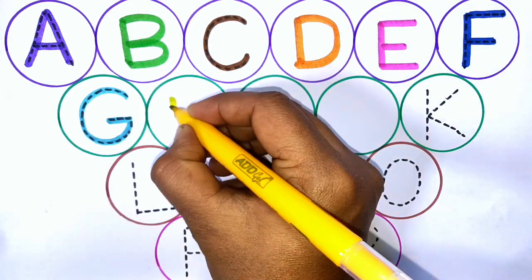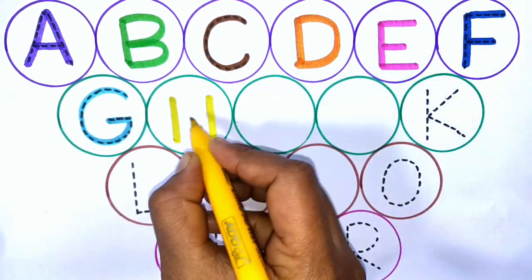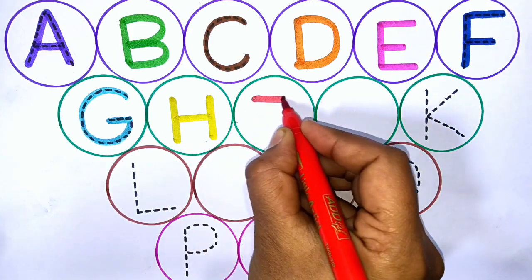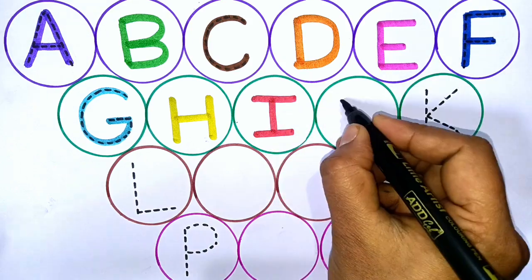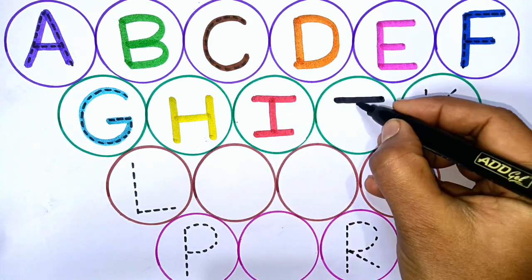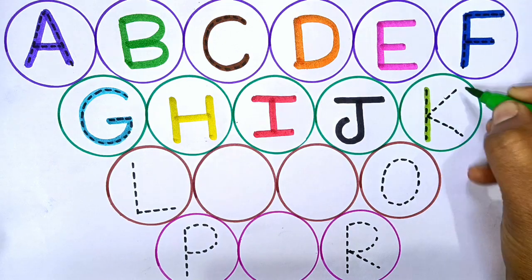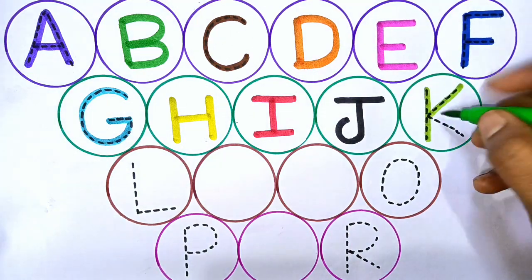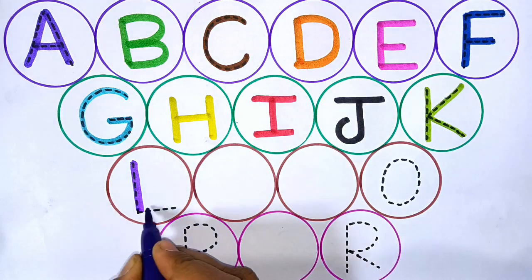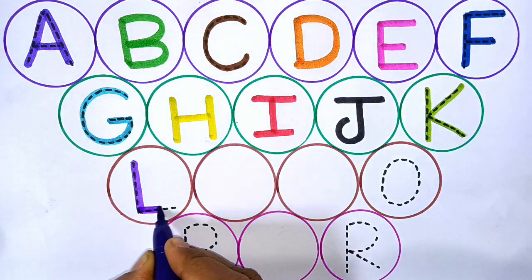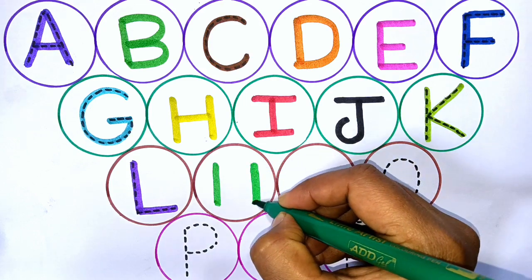E, E for elephant. F, F for fingers. G, G for goat. H, H for hand. I, I for ice cream. J, J for juice. K, K for kite. L, L for lemon. M, M for man.